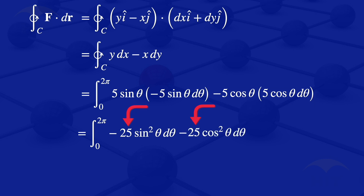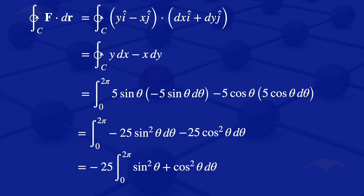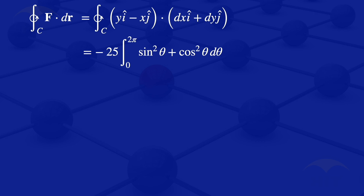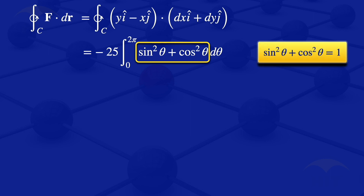Since minus 25 is common to both terms, we factor it out of the integral, giving minus 25 times the integral from 0 to 2π of (sine² theta plus cosine² theta) dθ. From trigonometric identities, we know that sine² theta plus cosine² theta equals 1, so that highlighted part becomes 1. Our integral becomes minus 25 times the integral from 0 to 2π dθ.